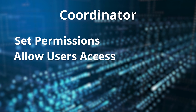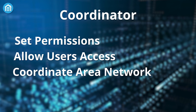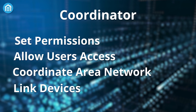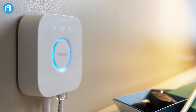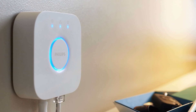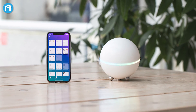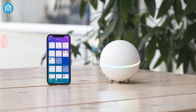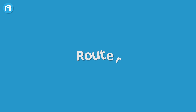It is not necessary for your coordinator to have a smart hub, although it is preferred as it is the most powerful setup. With the coordinator, you can set permissions, allow user access, coordinate your personal area network, and link your devices with the web and apps. If you rely on a hub, hubs like Homey also link your Zigbee devices to other gadgets that use other protocols like Wi-Fi, infrared, or Z-Wave.